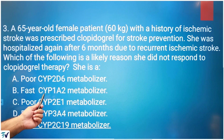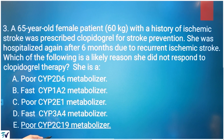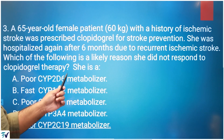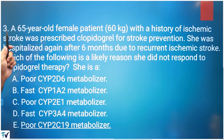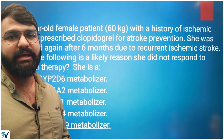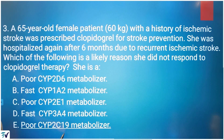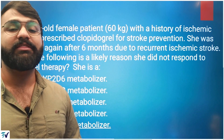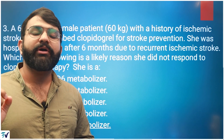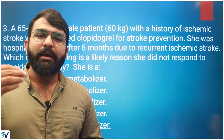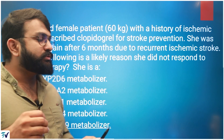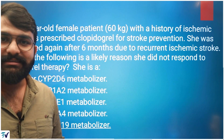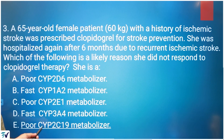CYP-450 isoenzymes include CYP-2D6, CYP-1A2, CYP-2E1, CYP-3A4, and CYP-2C19. This patient is identified as a poor CYP-2C19 metabolizer. Clopidogrel is a prodrug — it is an inactive drug that must be activated by CYP-2C19 into its active form.